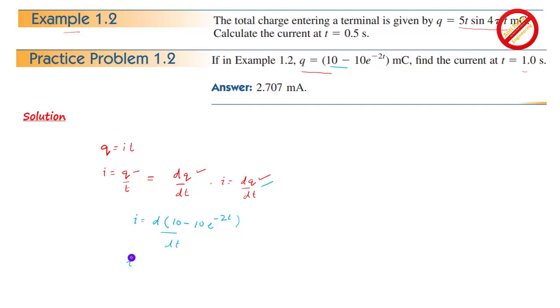I open this equation: I equal to, we have two terms. So this will be d by dt of 10 minus d by dt of 10 exponential minus 2t.